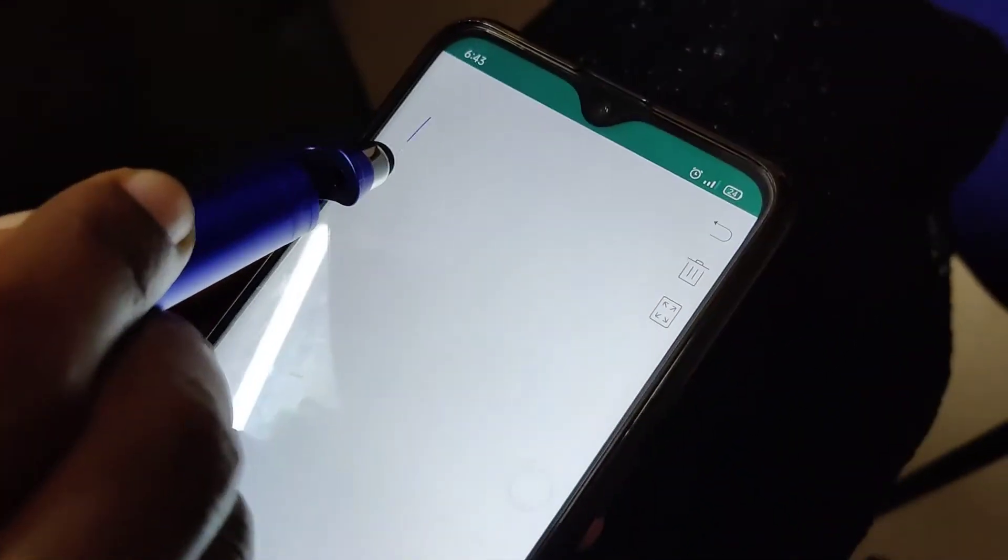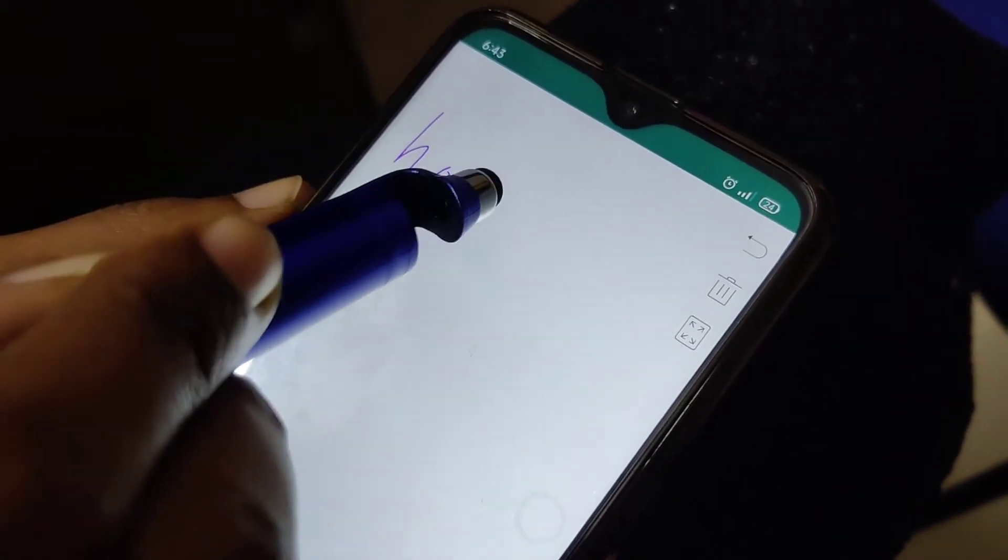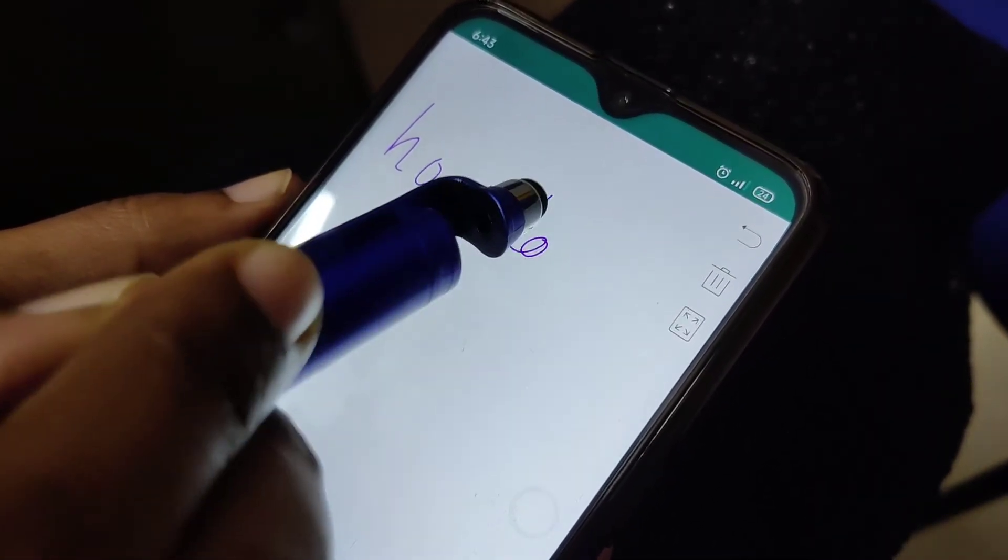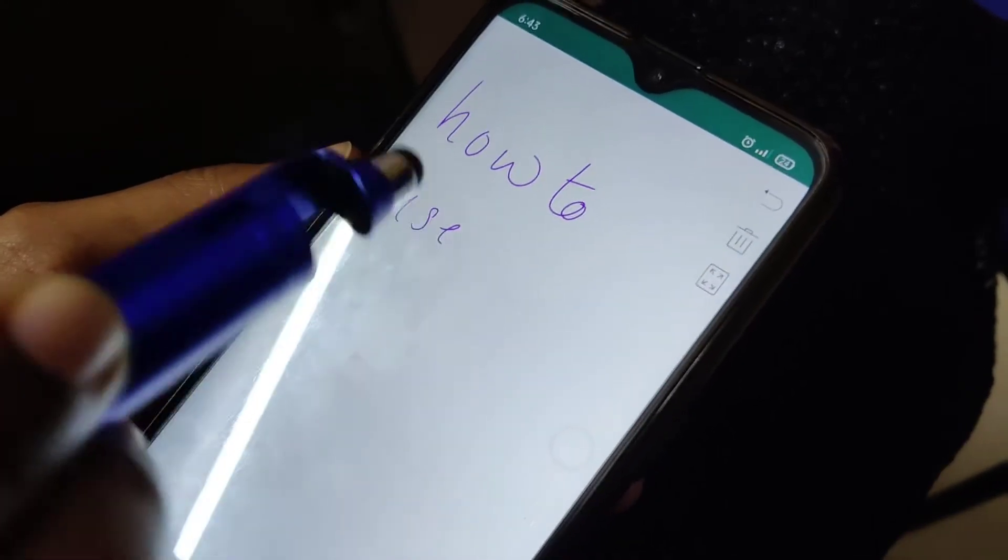In today's video, we are showing how to use a pen on an android phone. For writing something on your android phone using a pen, you must simply download an app.